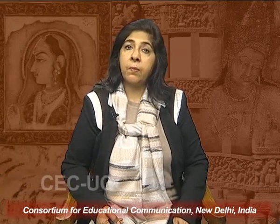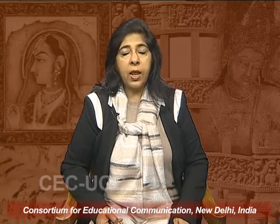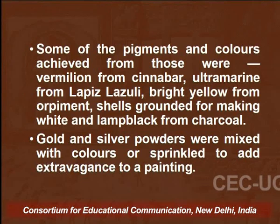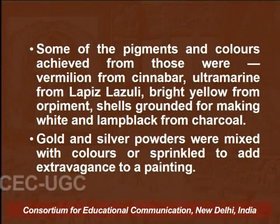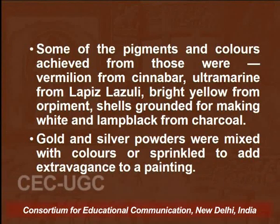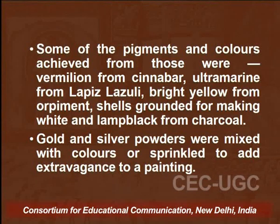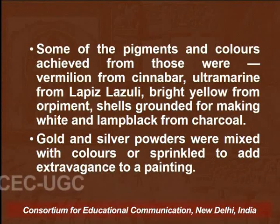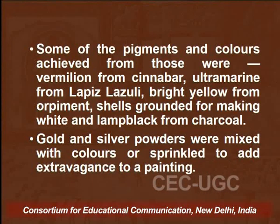There are records telling us that artists were given incentives and salary increments according to the kind of work they did. The recorded names of master artists also informed us of the position they enjoyed in the Royal Atelier. Once the painting was complete, a gemstone was used to burnish the work to set the colours and give a desired radiance or glow. Some of the pigments and colours used were: vermilion from cinnabar, ultramarine from lapis lazuli, very bright yellow from orpiment, shells were ground for making white, and lamp black was made from charcoal. Gold and silver powders were also mixed with colours or sprinkled to add extravagance to any piece of art.